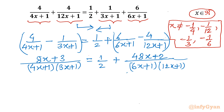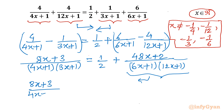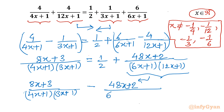Now I will take the RHS fraction to the left-hand side. The equation becomes (8x+3) over (4x+1)(3x+1) minus (48x+2) over (6x+1)(12x+1) equals 1/2.